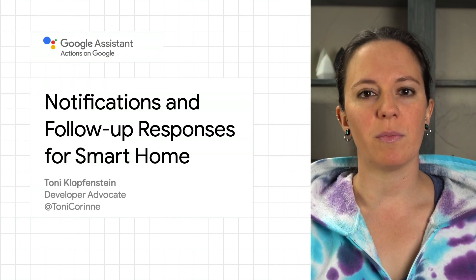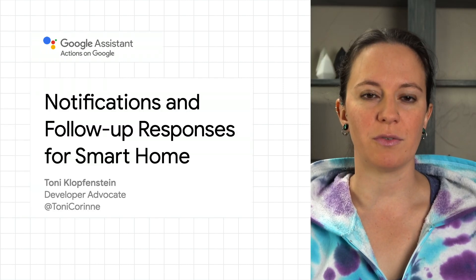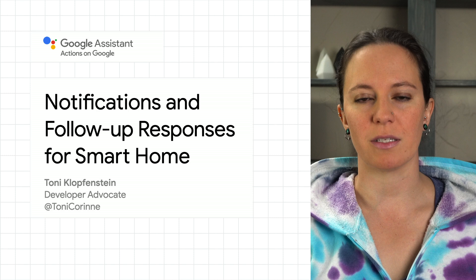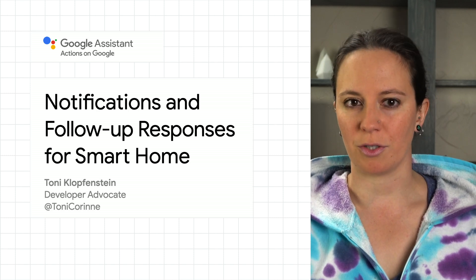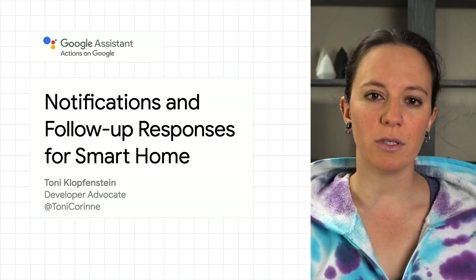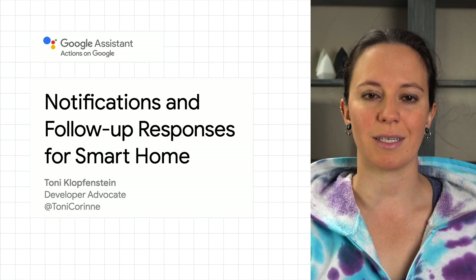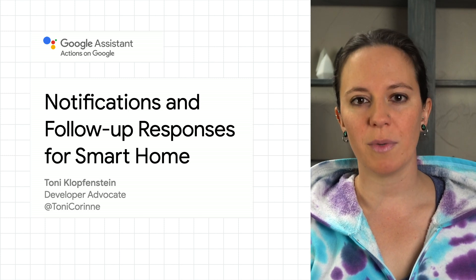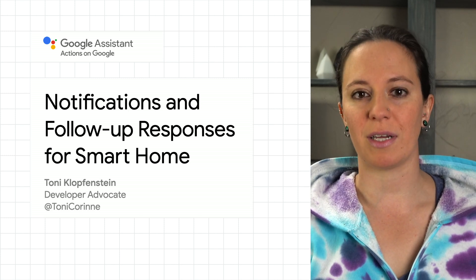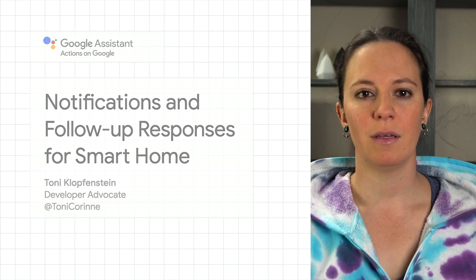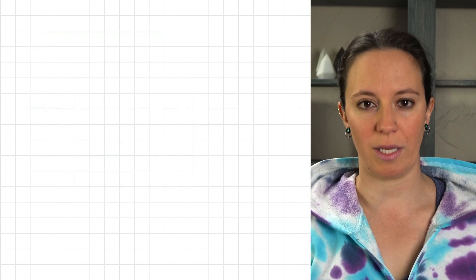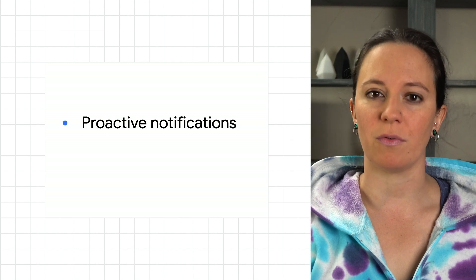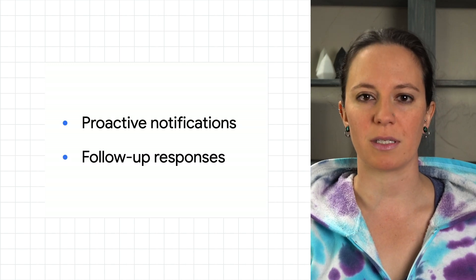Notifications of events is one of the most effective ways for smart home devices to engage with users. You can implement notifications through your smart home actions to alert users to things like timely device events, or as confirmation that requested device state changes succeeded. Your smart home action can alert users in two different ways: either through proactive notifications or through follow-up responses.